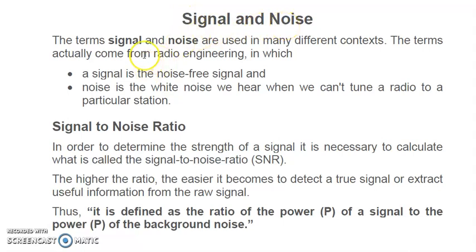When we say signal in electronics, it means any electrical signal — either voltage, current, or power. When we say signal alone, it means a noise-free signal. Noise means an unwanted signal. In electronics, noise is the unwanted signal, and signal means the wanted signal.